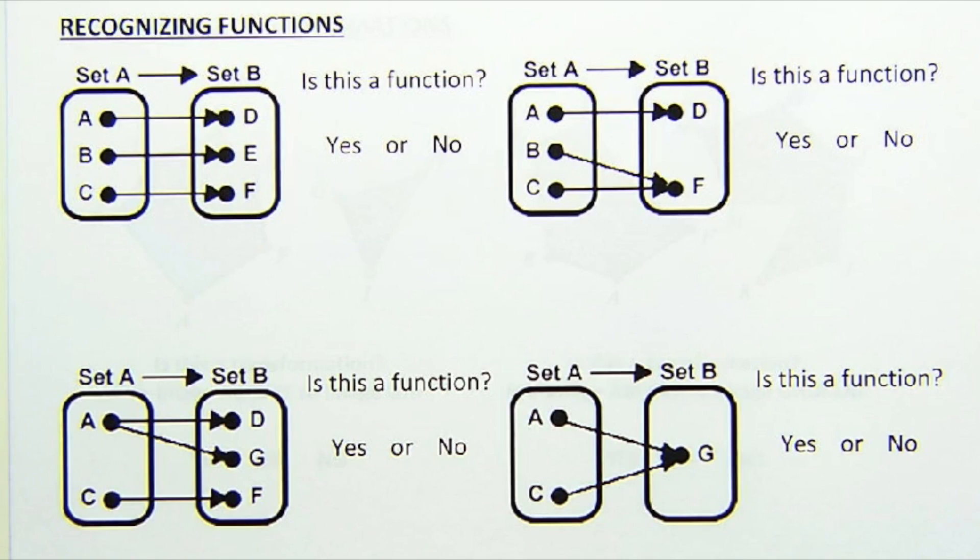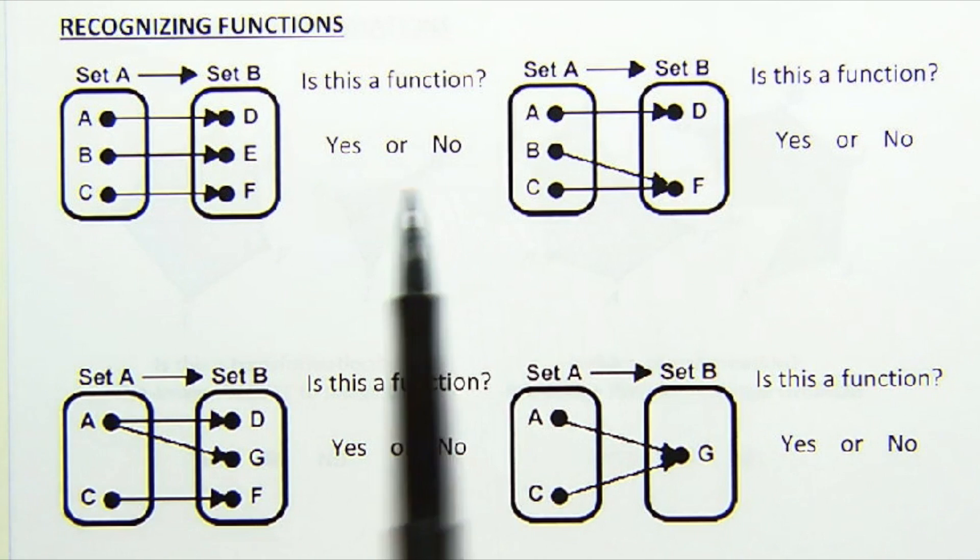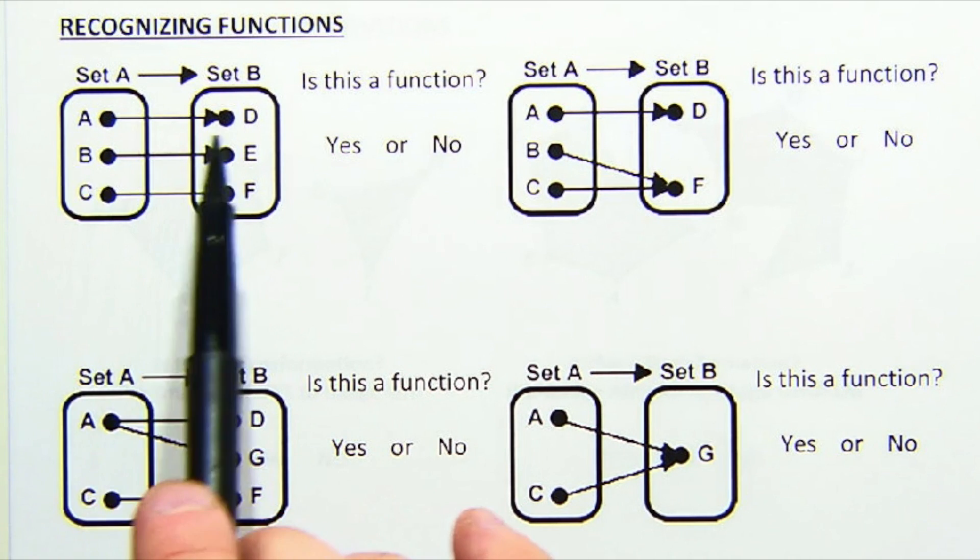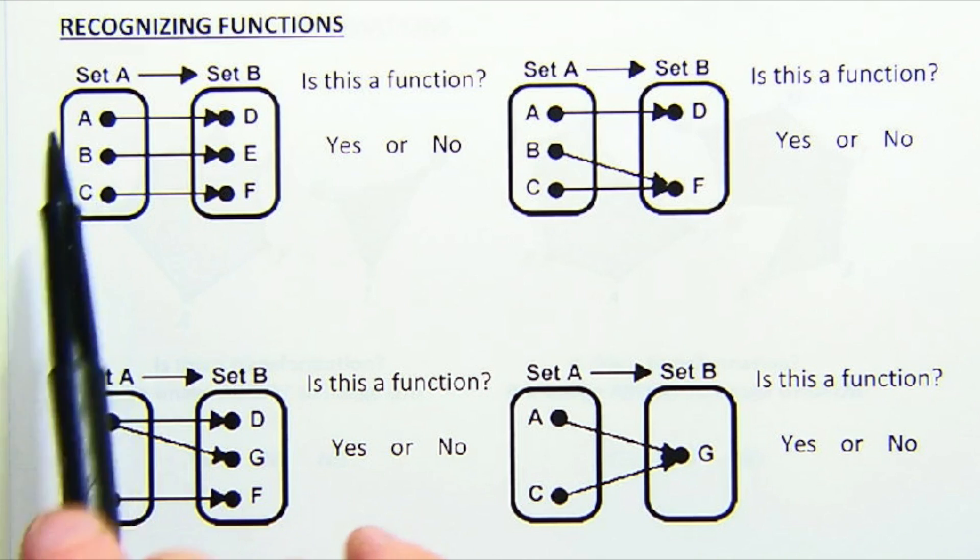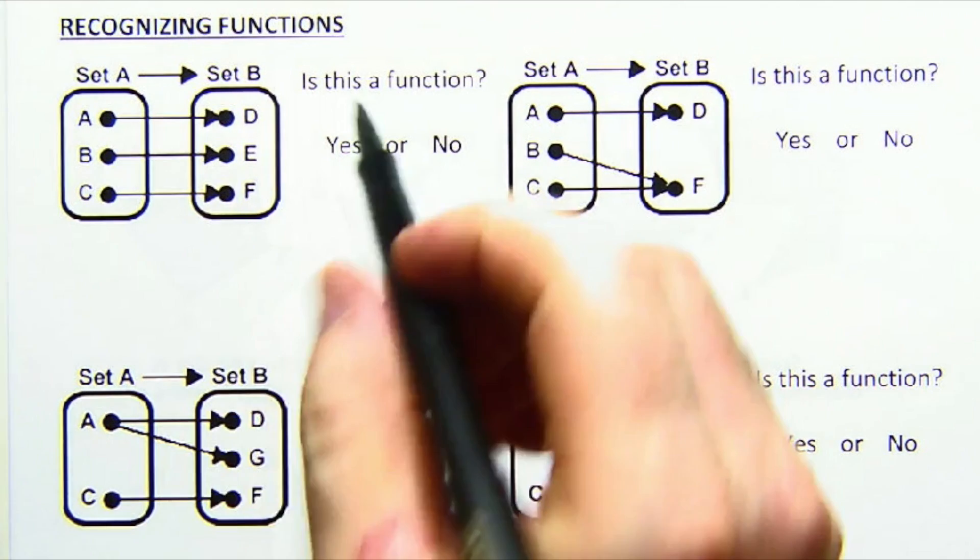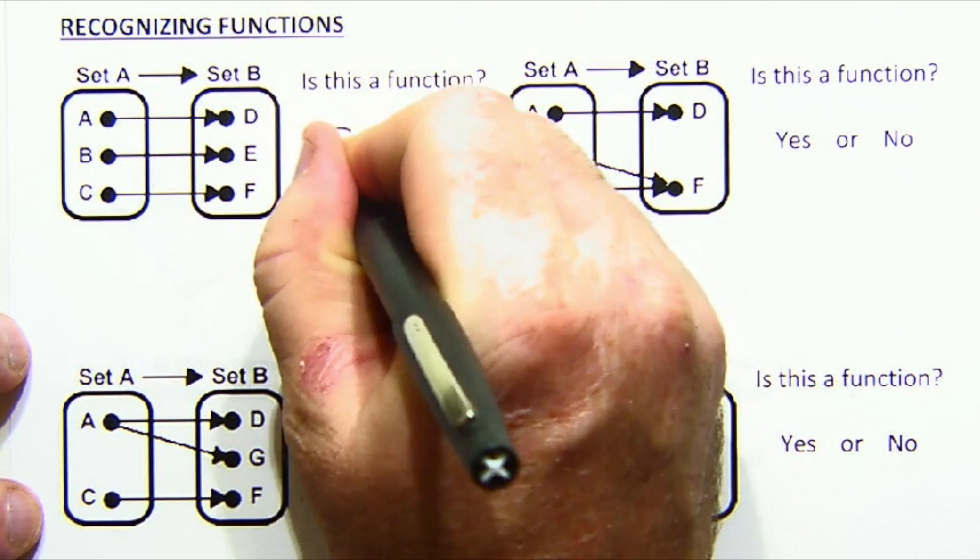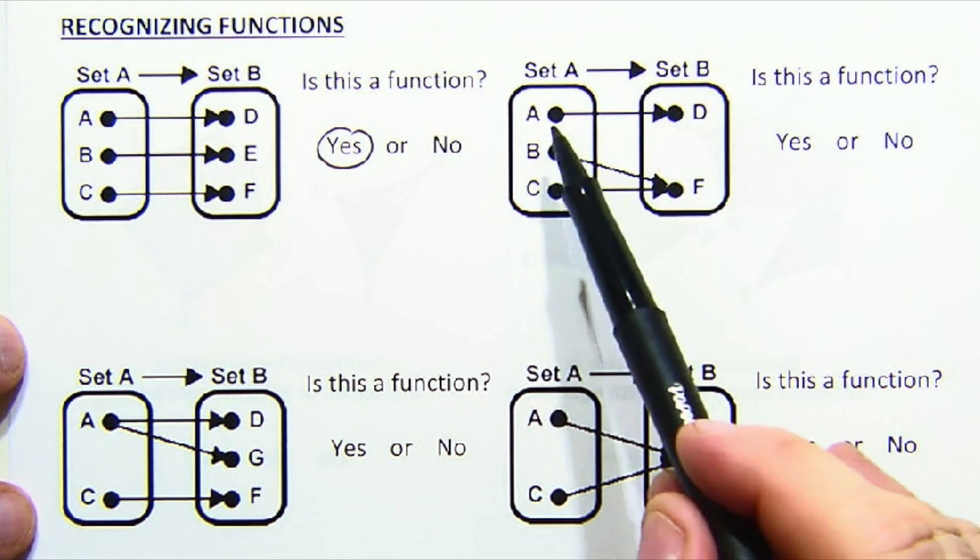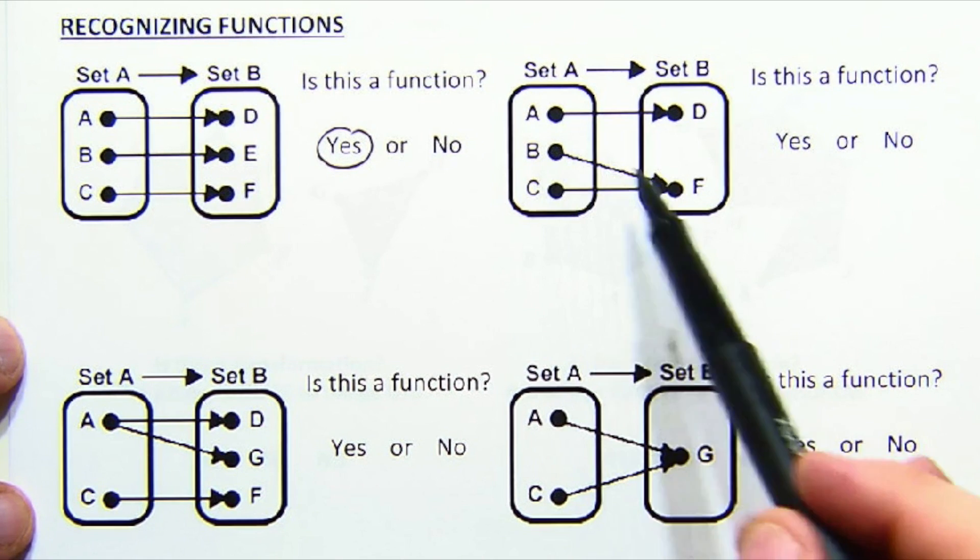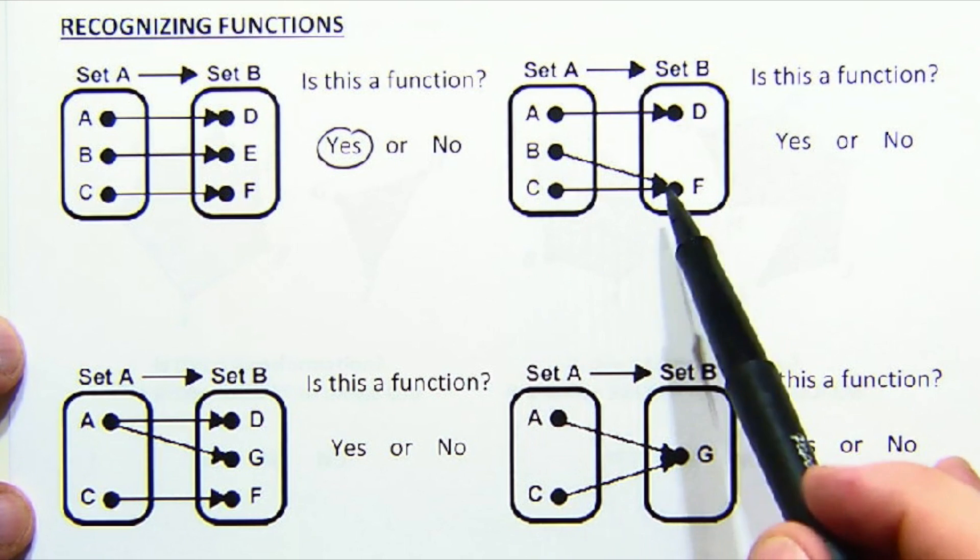So let's look at a couple examples from the worksheets, just to give you a direct view of what they might look like when you go home and try them on your own. So here's a set A, set B, or our domain and our range. Every item in A got assigned an item in B. Is this a function? Of course it is, yes it is. In this case, A went to D, B went to F, C went to F.